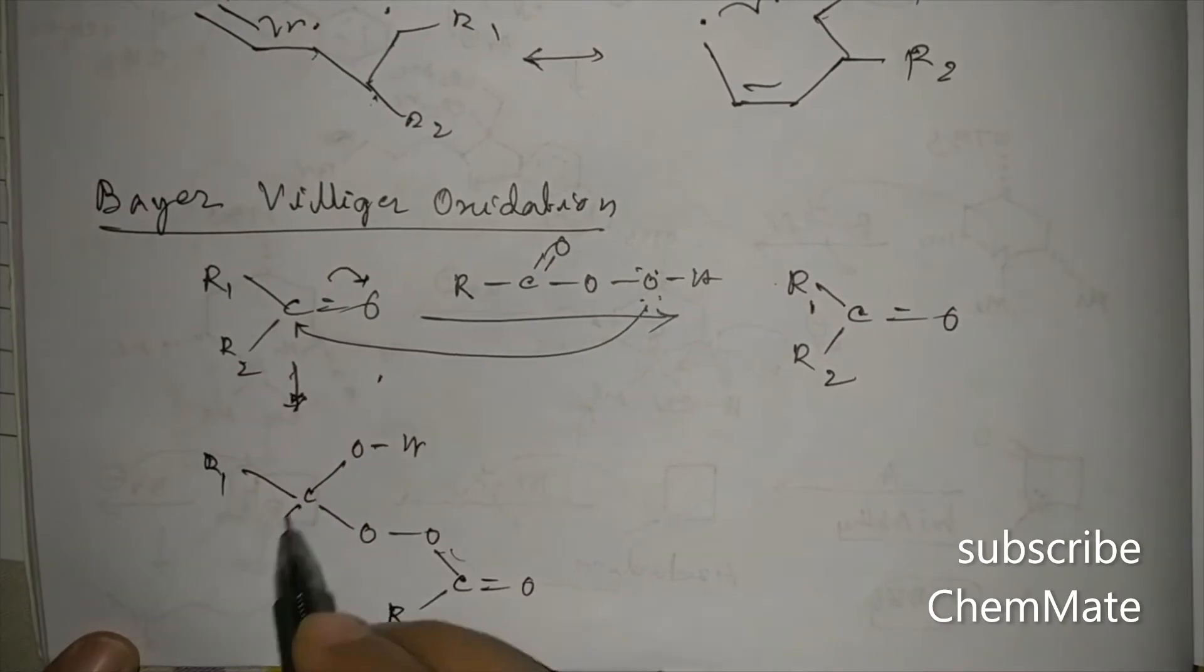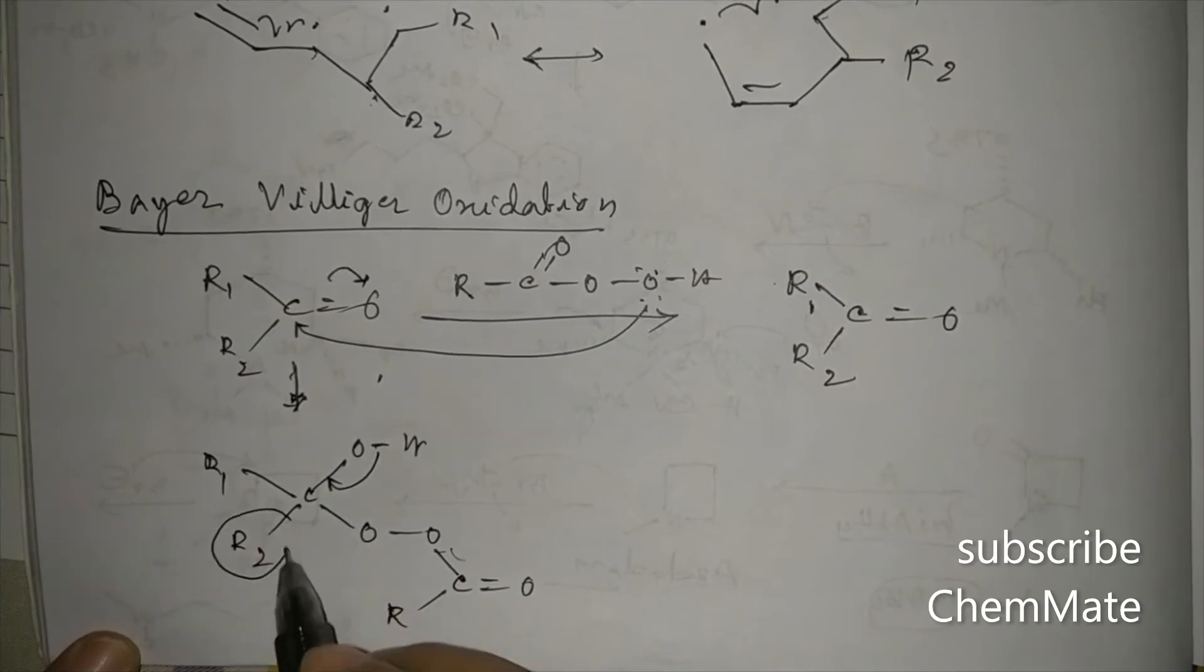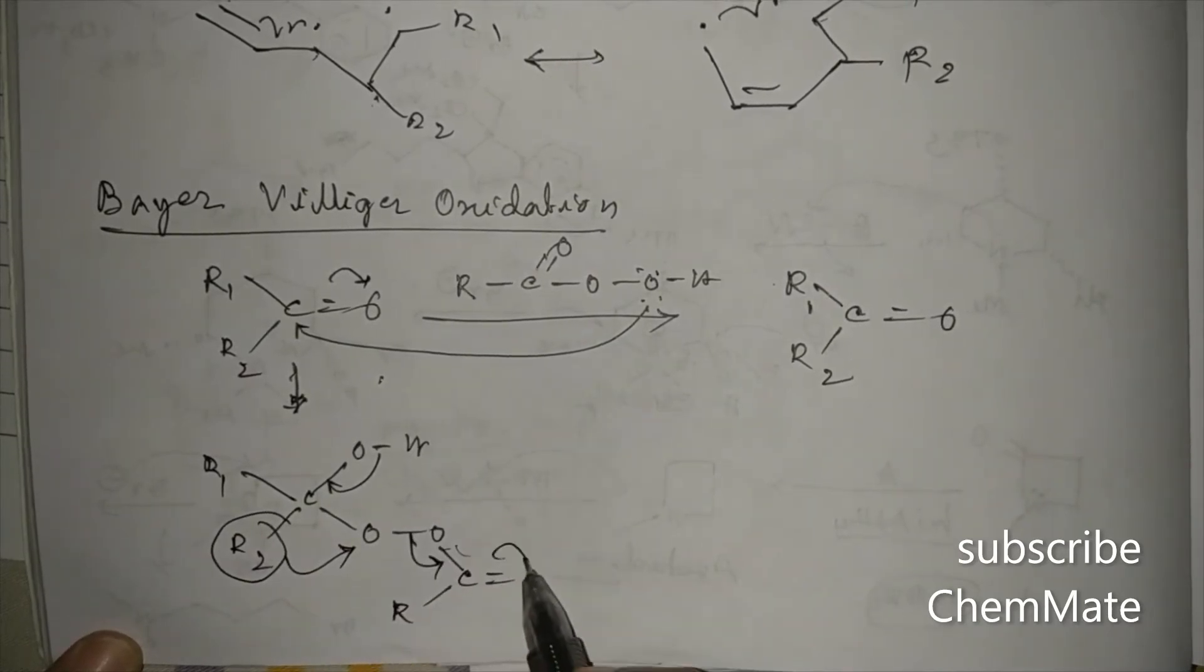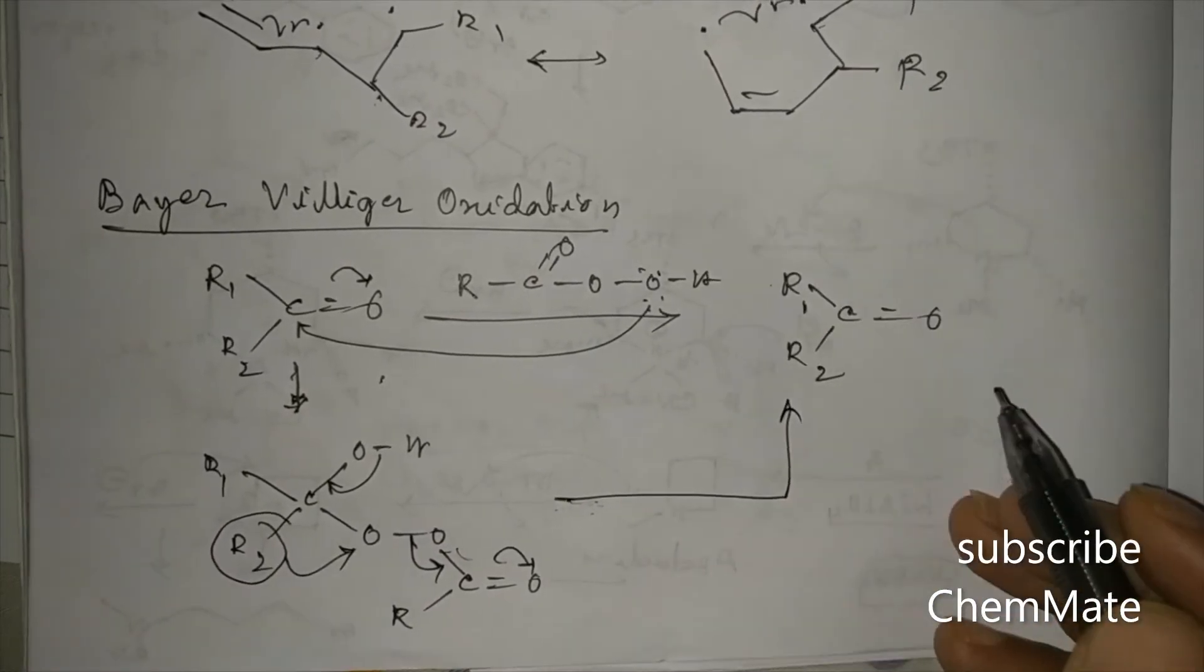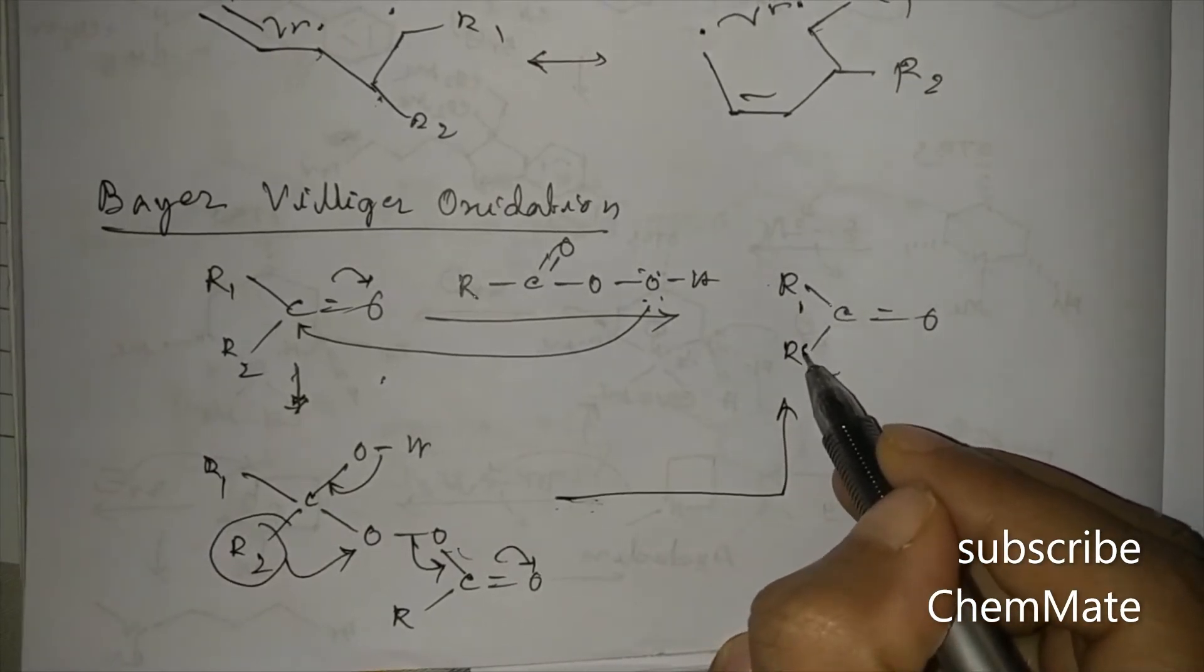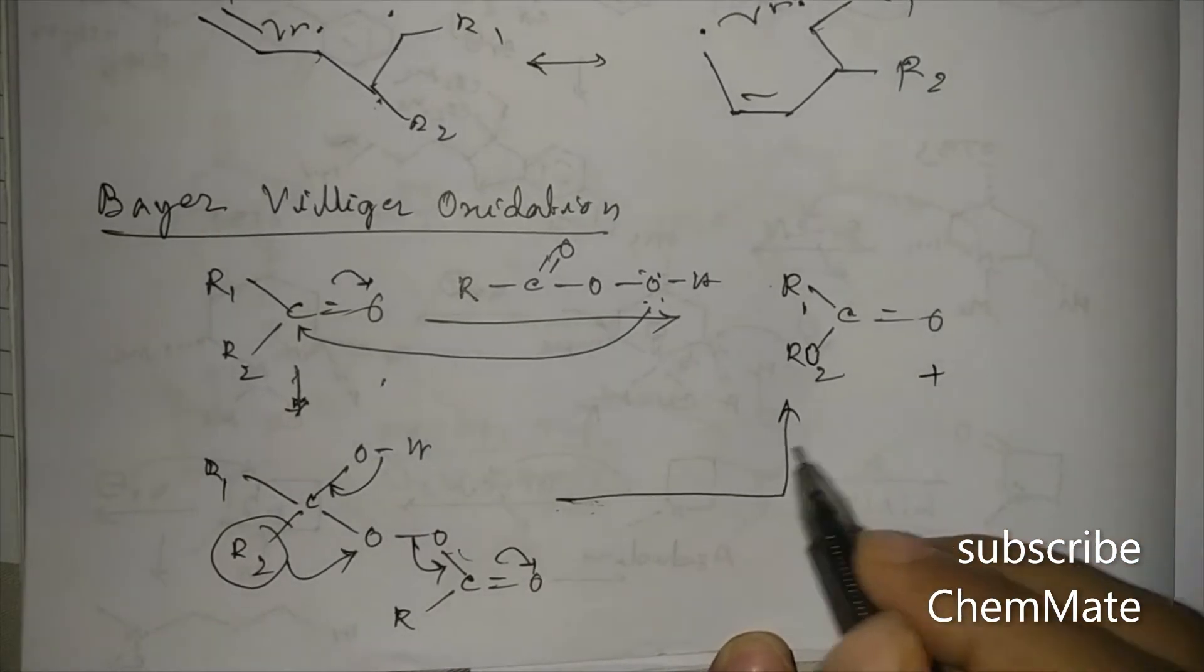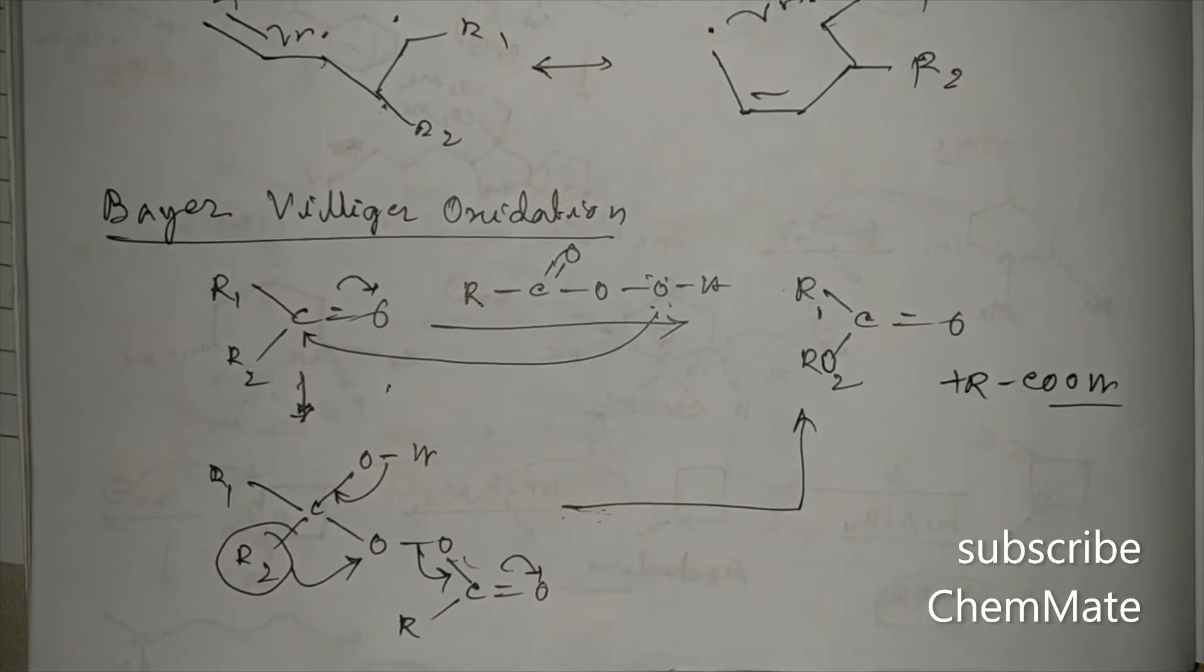Here R1, R2. Now here, R1 group migrates into this oxygen and this will form this ester, plus RC=O OH. Sorry, here it will be OR, this ester plus RC=O OH.